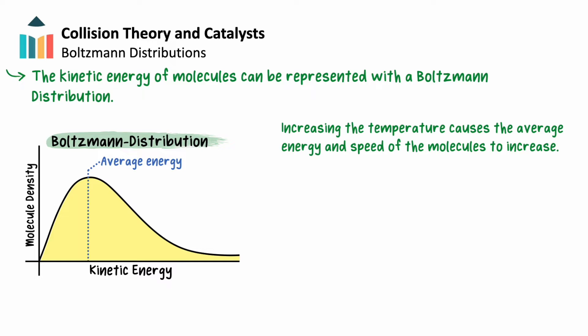Increasing the temperature causes the average energy and speed of molecules to increase. The Boltzmann distribution still starts at zero, but the distribution becomes broader and the average energy peak shifts to the right. The number of molecules stays the same, so the area under the curve cannot change. If the graph is broader, the height of the peak must decrease to keep the area the same.